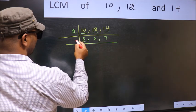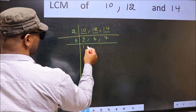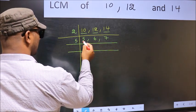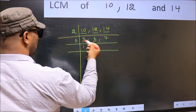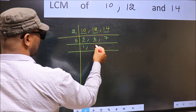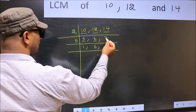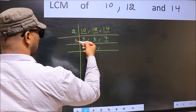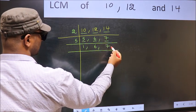Now here we have 5. 5 is a prime number. So 5 1s, 5. The other number 6, not divisible by 5, so you write it down as it is. The other number 7, 7 not divisible by 5, so you write it down as it is.